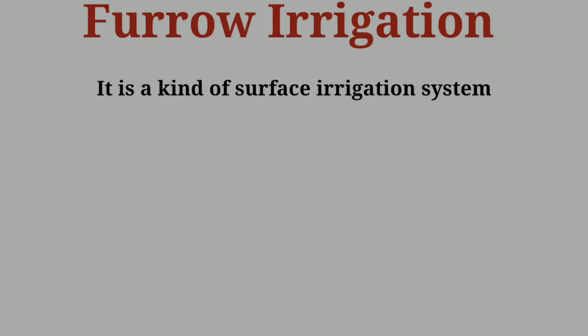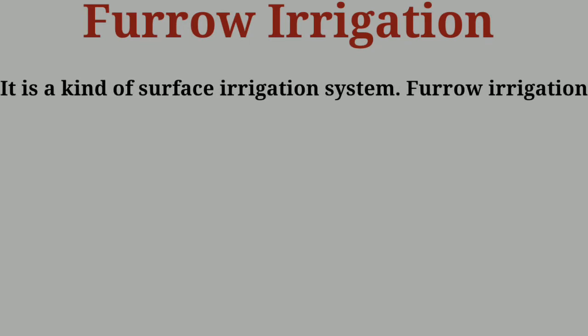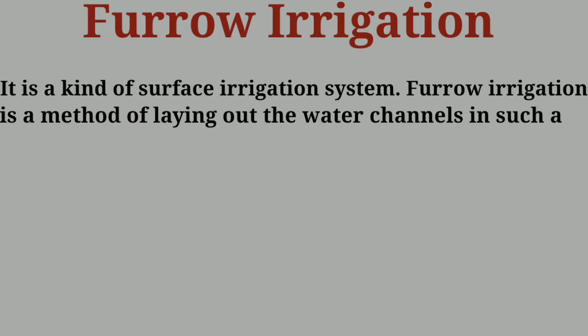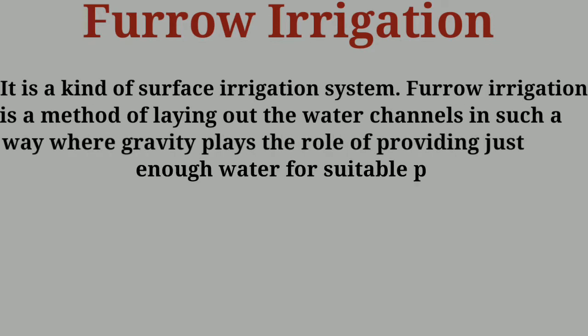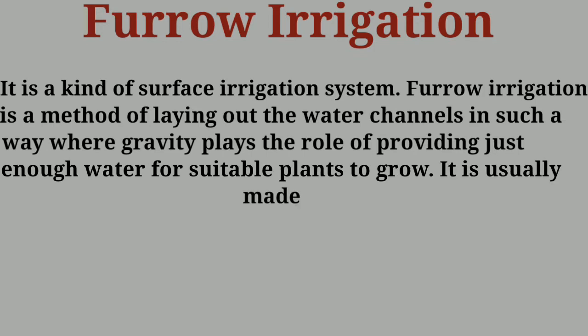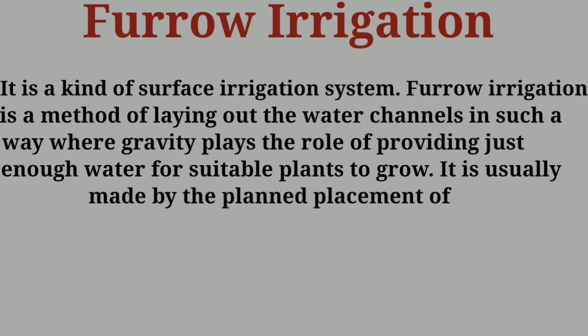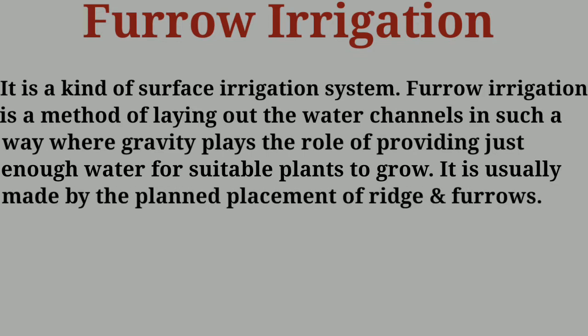Furrow irrigation is a kind of surface irrigation system. As we know, in India there are many irrigation methods, like drip irrigation, basin irrigation, sprinkler method, furrow irrigation, and watering method. Today we will see a detailed video about furrow irrigation.